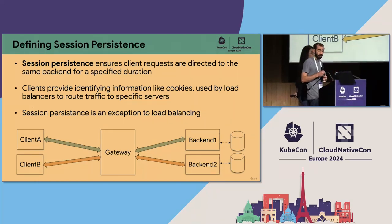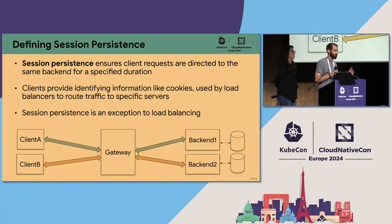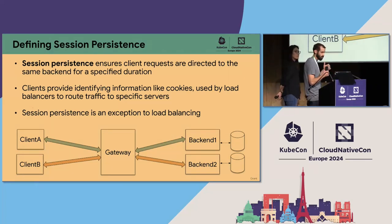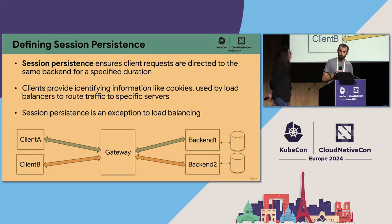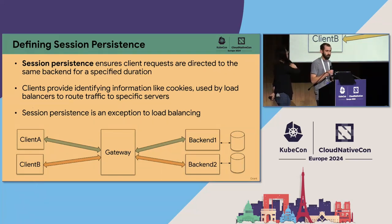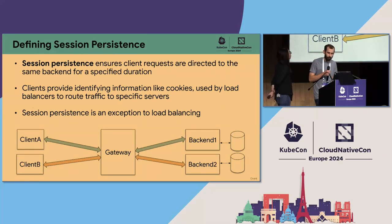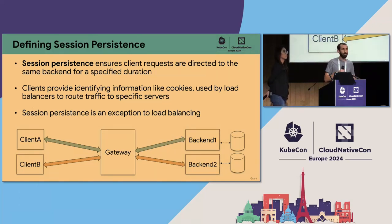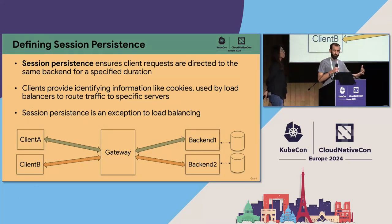So what is session persistence? It's about making sure that when you use a website or an app, your request is going to the same server for a certain duration or specific amount of time. Clients can achieve this by providing identifying information like a cookie, which is used by a load balancer to route traffic to the same server. You can also think of this as an exception to load balancing — it bypasses a proxy's load balancing algorithm and goes directly to the backend it has previously established a session with. Session persistence is not a standardized name; some people call it sticky sessions, some call it session affinity, but we need to establish a naming convention as the foundation for this GEP.